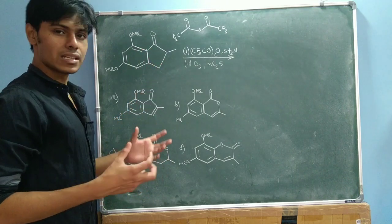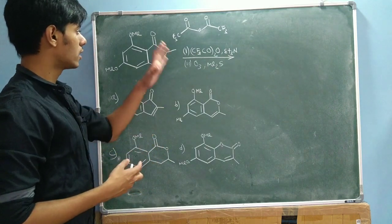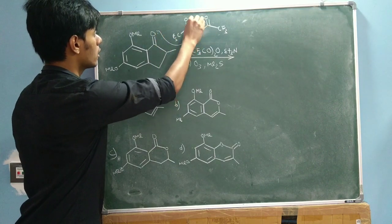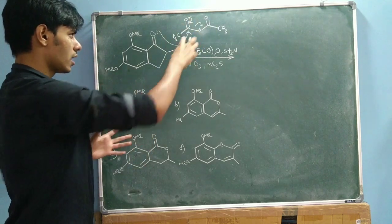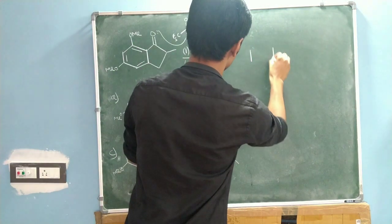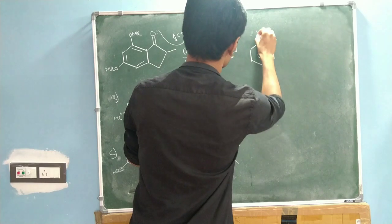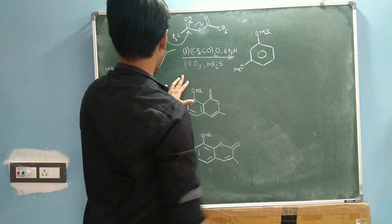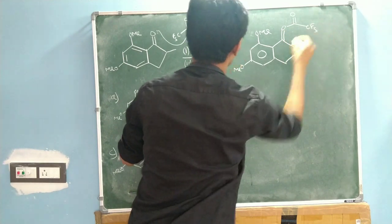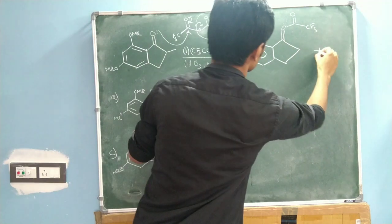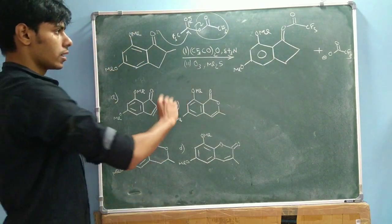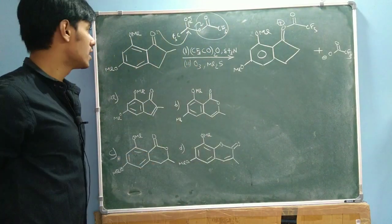Now, how can it be generated? If you look at the starting material and trifluoroacetic anhydride, one thing that can happen is this oxygen lone pair attacks, and that will result in the –O–CO–CF3 leaving as a leaving group. So you get the aromatic ring with the OMe groups, and in this part you have a positive charge induced.